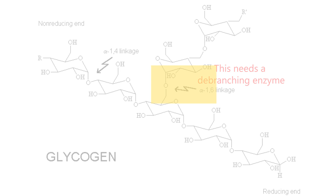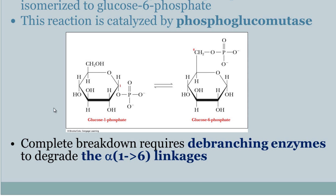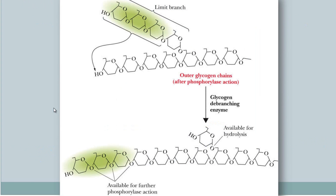Looking at the structure here: this is an alpha-1-6 branch point, and these are all alpha-1-4 linkages. When we get within four molecules of a branch point, we use what is called a glycogen debranching enzyme. Two enzymes work together: one takes the branch away, and then a second one comes in to hydrolyze the alpha-1-6 linkage and remove it.